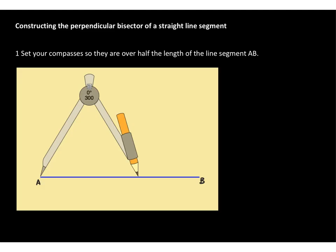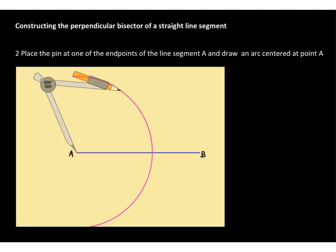Let's go through these stages just again to make sure everybody understands how you construct the perpendicular bisector of a straight line segment. Number one, set your compasses so they are just over half the length of the line segment, as you can see in the diagram. Number two, place the pin at one of the endpoints of the line segment and draw an arc, which is centered at this point. I've chosen to do this around point A, first of all.